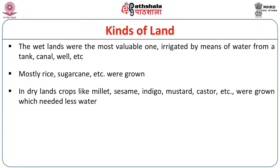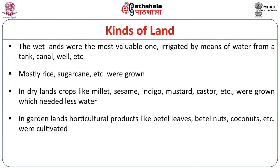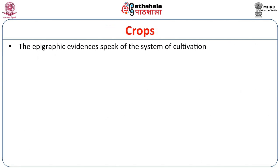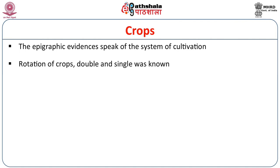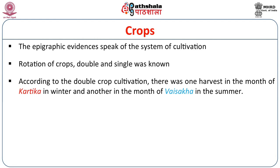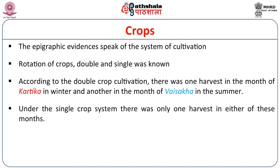In dry lands, crops like millet, sesame, indigo, mustard, and castor were grown, which needed less water. In garden lands, horticultural products like betel leaves, betel nuts, and coconuts were cultivated. Forests and pasture lands were kept mainly for cattle grazing. Many epigraphical sources speak about the system of cultivation and also the rotation of crops, whether double or single, which we get from inscriptional sources of the Kakatiya period. According to the double crop cultivation system, there was one harvest in the month of Kartika in the winter season, and another in the month of Vaishaka in the summer season. Under the single crop system, there was only one harvest in either of these months.